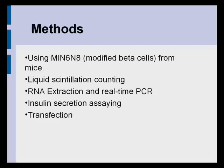In this investigation, the beta cells used were from the pancreas of transgenic mice. These cells have been genetically modified so that they could produce insulin in a regular manner in response to varying concentrations of glucose.